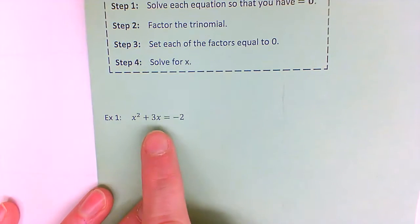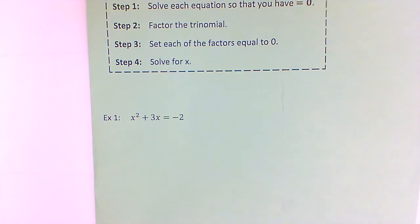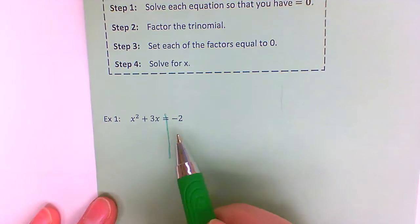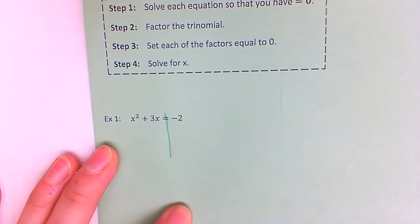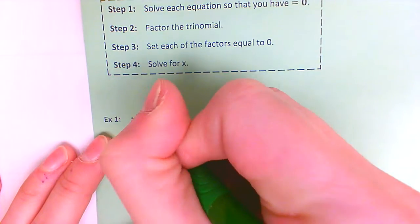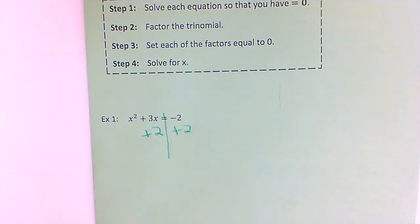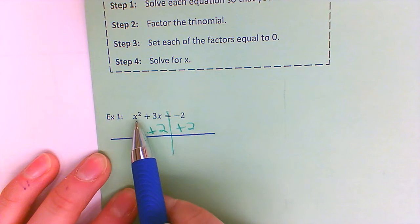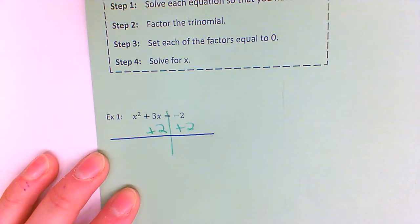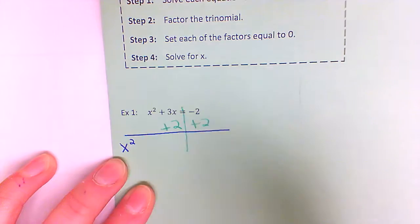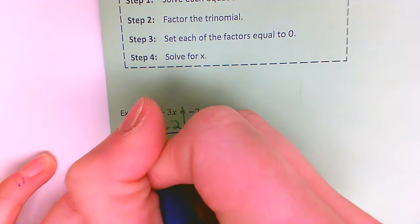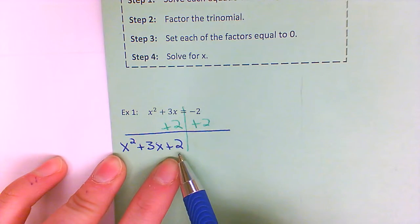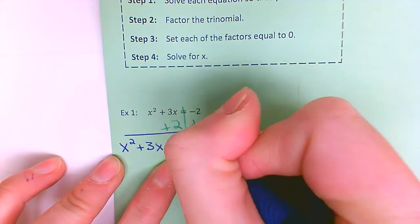When I say solve each equation for equals zero, it means if you have something on the right side that's not zero, we're just going to move it over to the left side. The opposite of a negative two would be to add two to each side of the equal sign. I need to rewrite the left side — none of these are like terms since I've got x squared, x, and a constant. I'll rewrite in standard form: x squared goes first, the positive three x goes second, and the constant goes last. Numbers without letters always go last. And now this equals zero.